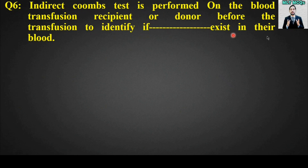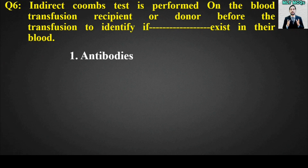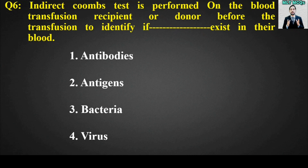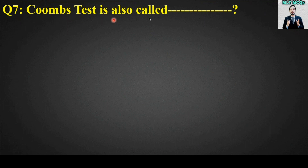MCQ number six: The indirect Coombs test is performed on the blood transfusion recipient or donor before the transfusion to identify if blank exists in their blood. Options: antibodies, antigens, bacteria, or virus. The right answer is option number one — antibodies. The indirect Coombs test identifies if antibodies exist in the recipient's or donor's blood before transfusion.